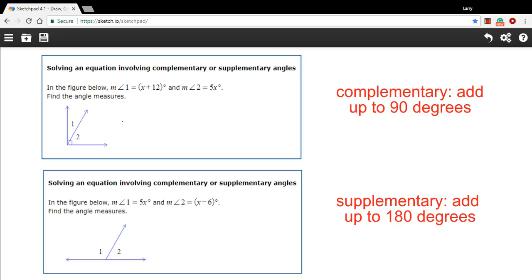So in this first problem, they're telling us that the measure of angle 1 is x plus 12. So instead of a number, we're getting an expression, an algebraic expression. I'm just going to jot that in there. And the measure of angle 2, they say, is equal to 5x.